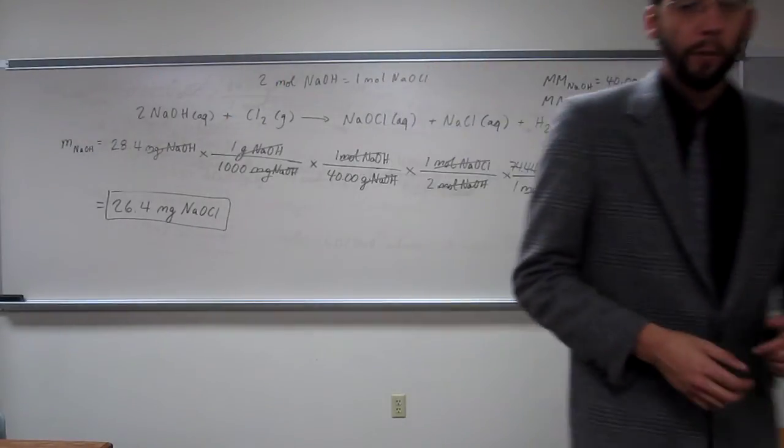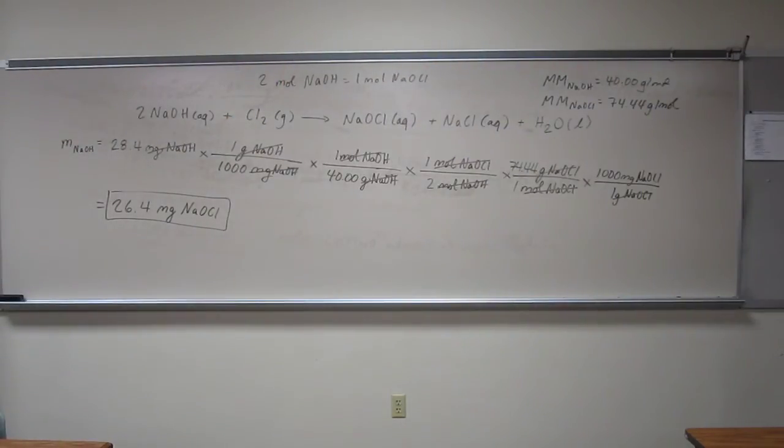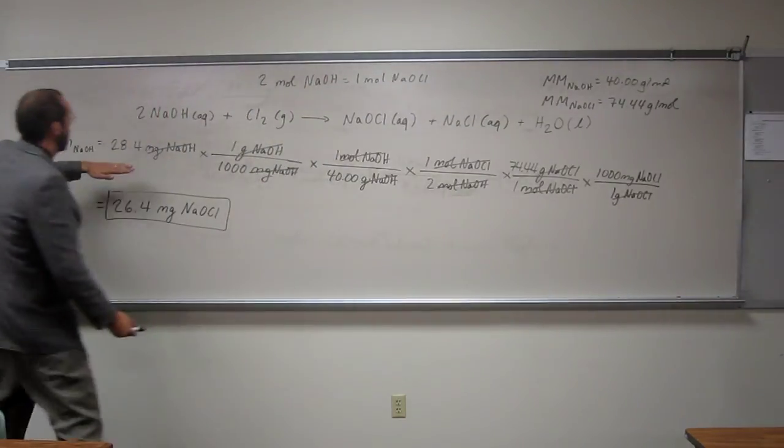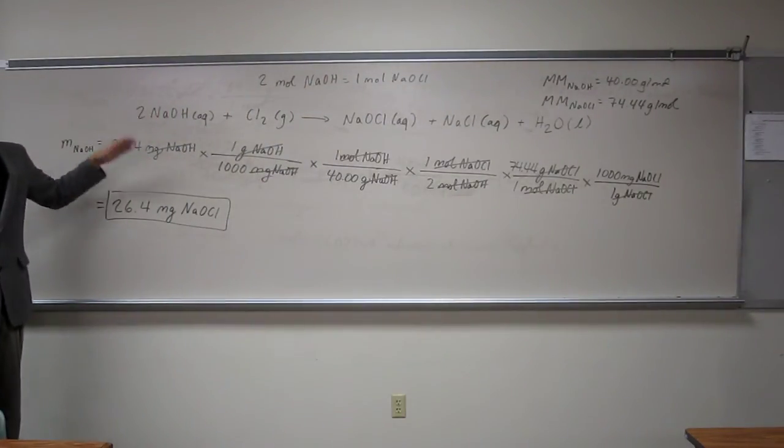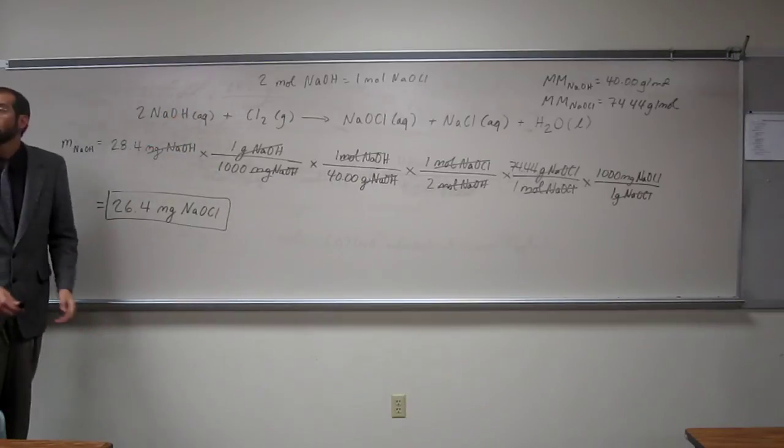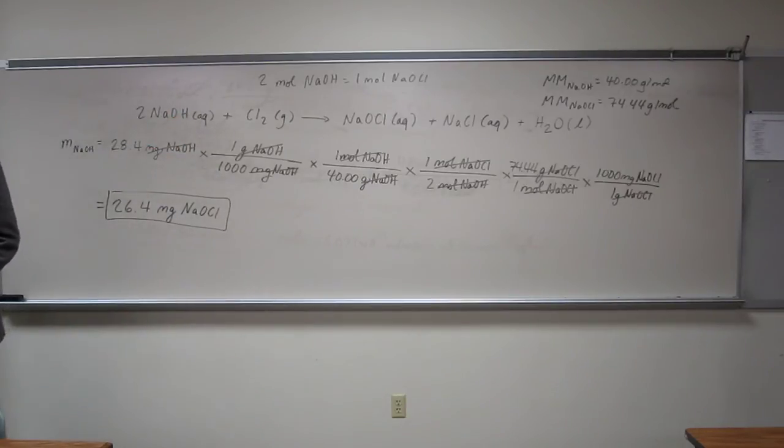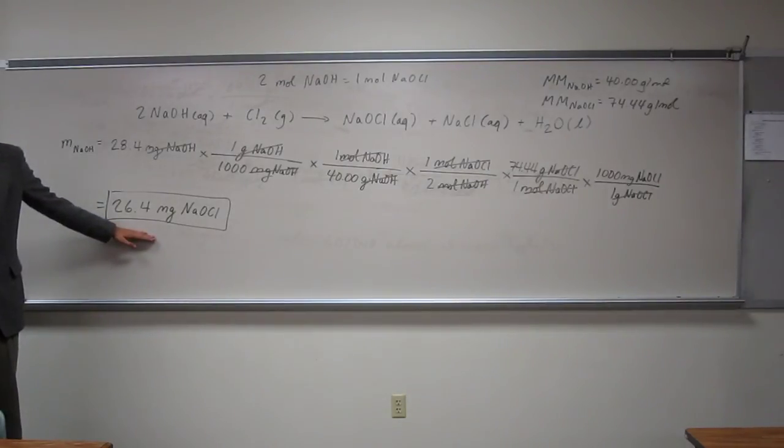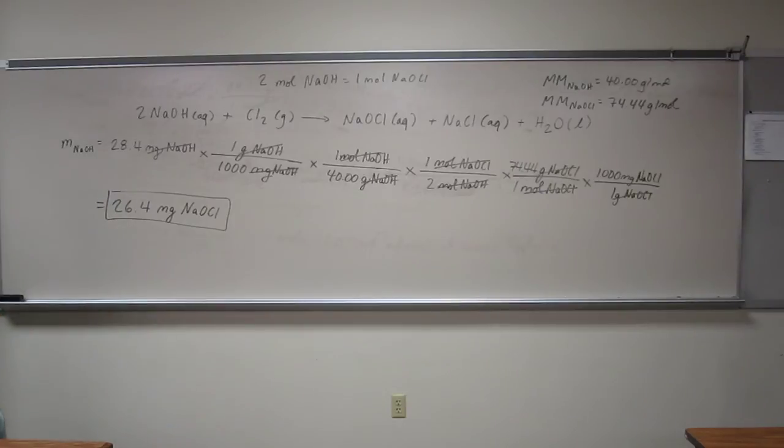Oh, maximum yield, right? 100% of reactant goes to product. That's what maximum yield means. What if it was 80% yield and you just multiply that by 0.8? So 80% yield, yeah. You would take this as 100% yield and multiply that by 0.8.